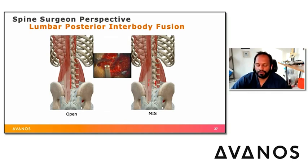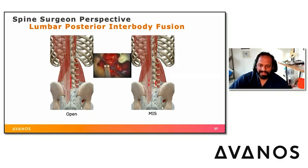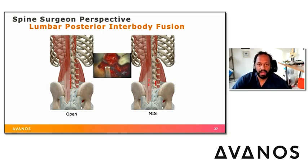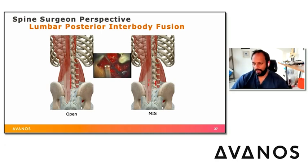For lumbar posterior fusions — where an open incision is made to place cages, rods, and screws — the transverse processes at the level of surgery are dissected out, so you want to stay above that and place catheters in more normal anatomy. All variants, whether minimally invasive or open, call for bilateral catheter placement above the surgical site.